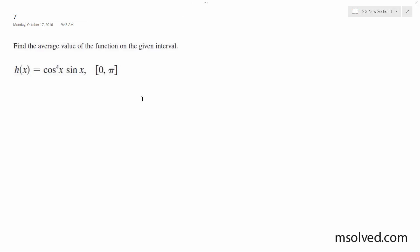All right, we have this function here. We want to find the average value. So actually in this case, average value is going to be equal to 1 over b minus a from a to b, h of x, dx.